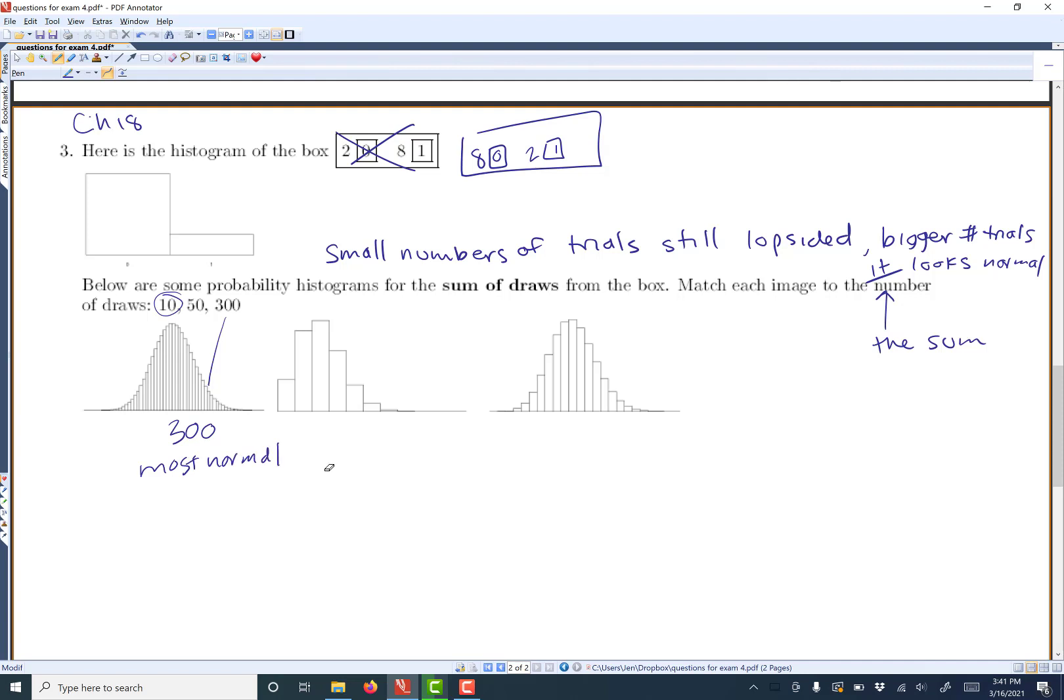And again, I would never ask you to look at this and say, oh well, that must be 300. You can't do that. But what you can do is compare three graphs and figure out which one's which. This one looks pretty lopsided, so I'm going to guess it's the smallest because it is lopsided still. This one's kind of in the middle, so we'll go with the only answer left of 50.